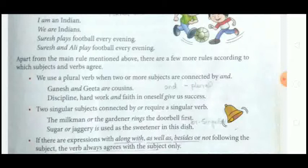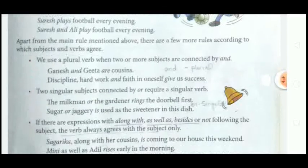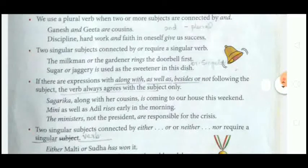'Sugar or jaggery is used as the sweetener in this dish' — here 'sugar' and 'jaggery' are both singular subjects connected by 'or'. Since both subjects are singular, the verb is also singular. That is why 'is' is used as the singular verb. When two singular subjects are connected by 'or', the verb will be singular.